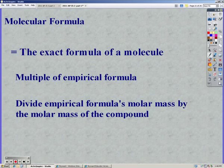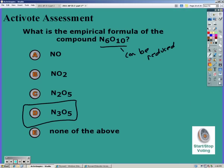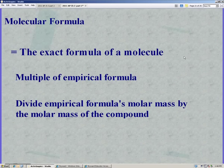A molecular formula is the exact formula of a molecule. It's a multiple of the empirical. So you just divide the empirical's molar mass by the molar mass of the compound to find the multiple that the empirical is. N6O10 is the molecular formula. N3O5 was the empirical. Notice N6O10 is twice as big, so it would be twice as heavy.